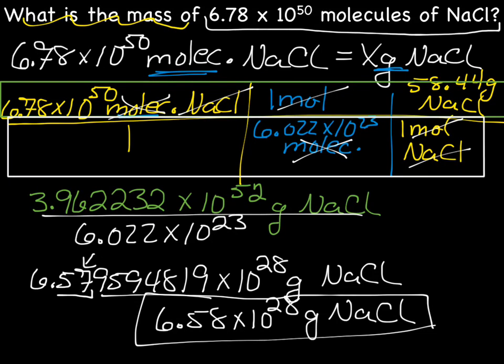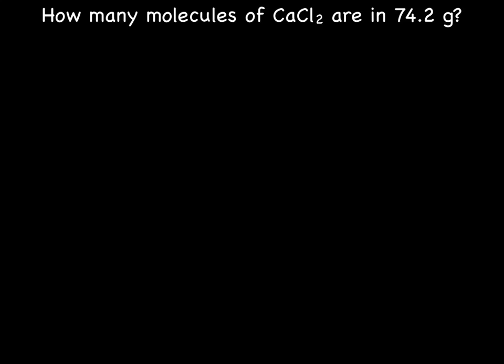While this is a fairly long problem, if you're really careful with your units — write your math problem, identify where you're starting and ending by identifying units, write units as you set up the grid and cross them out — it's not a big deal. Let's try another problem: how many molecules of calcium chloride are there in 74.2 grams? Hit pause, see if you can do it without me, then hit play and see how you did.